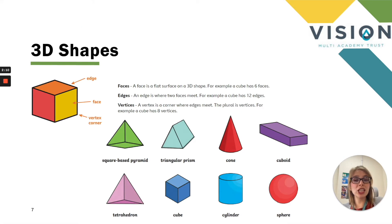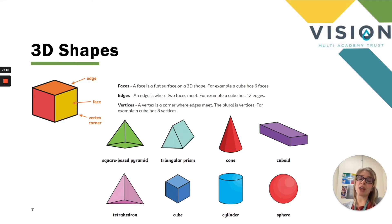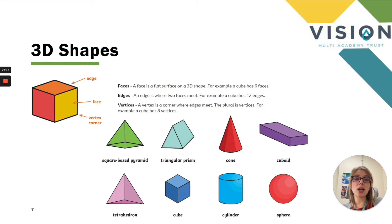Looking at 3D shapes — a quick recap. We know that a 3D shape has a length, a width and a height. A 3D shape has a face, which is a flat surface. It has an edge where two faces meet, and a vertex is a corner where edges meet.